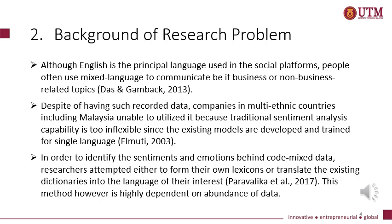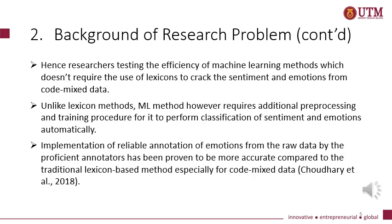In order to identify the sentiment and emotion behind Code Mixed Data, researchers attempted either to form their own lexicon or translate the existing dictionary into the language of their interest. This method, however, is highly dependent on abundance of data, which gives precision from low to medium only. Researchers tested the efficiency of machine learning methods, which don't require the use of a lexicon to detect sentiment and emotion from Code Mixed Data. Unlike lexicon methods, machine learning requires additional pre-processing and training procedures to perform classification of sentiment and emotion automatically. Implementation of reliable annotation by proficient annotators has been proven more accurate than traditional lexicon-based methods, especially for Code Mixed Data.